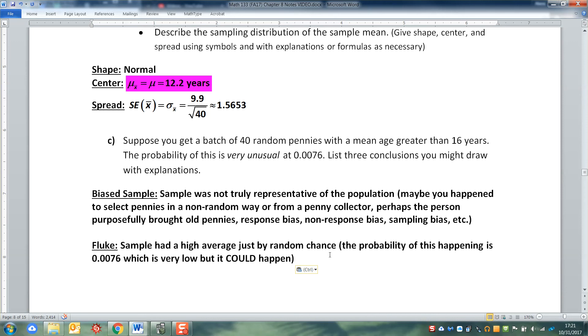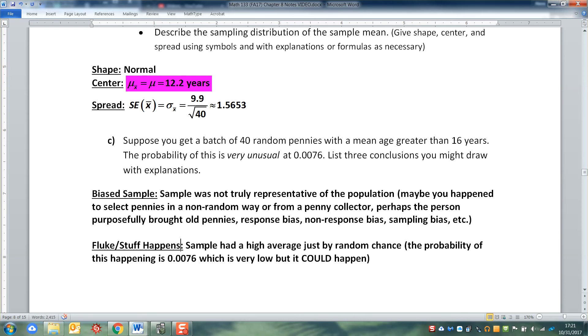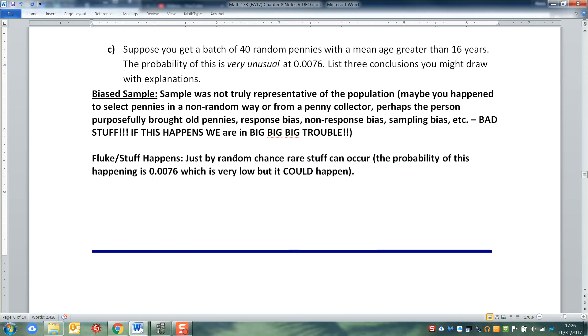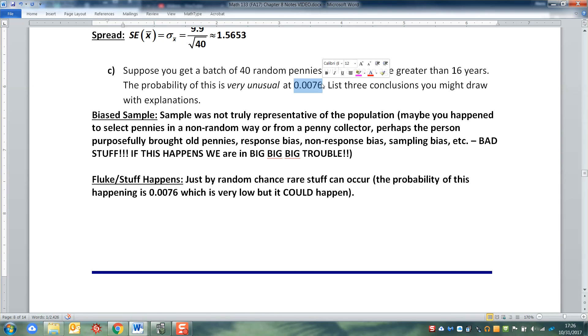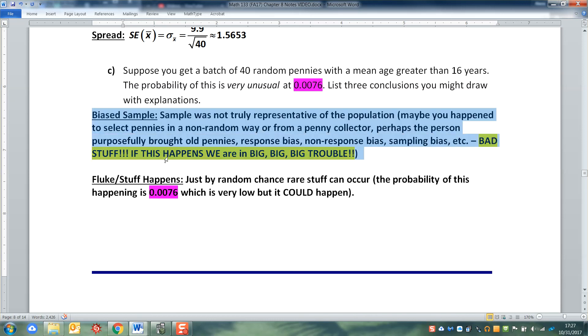So that's not really very useful for us mathematically to think about. So we kind of just always assume we don't have a bias, because if you have bias you've got big problems. So what we'll do instead is we'll talk about some other options. So biased sample big problems, then that means that it could be a fluke. Sometimes things that are random just happen. So this would be stuff happens. Sometimes stuff just happens by random chance. And getting that high average, that high of 16 years, could just happen by random chance. Just by random chance, rare stuff can occur. Now keep in mind, the probability of this fluke is what we found right here, it's that 0.0076. It's super rare, super unlikely, but it can happen.